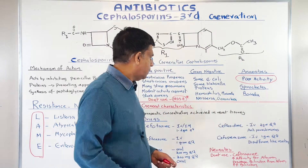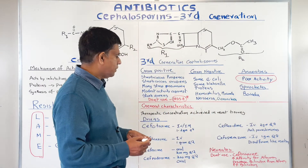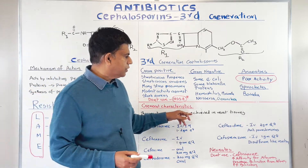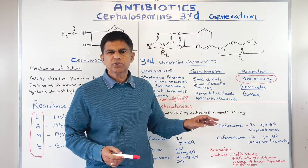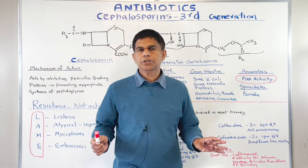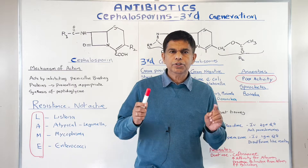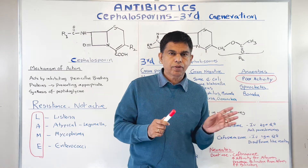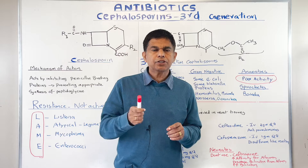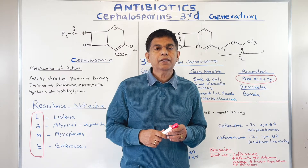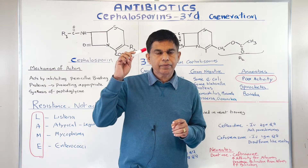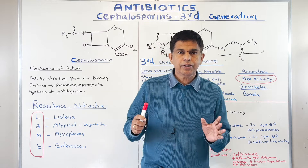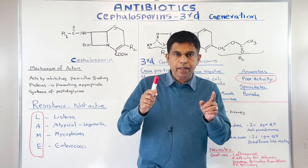For spirochetes, it's going to work against Borrelia. Now, the general characteristics: therapeutic concentration is achieved in most tissues — almost every tissue: bone, joint, bile. Bile is very important — we'll come back to that. It can also penetrate the CSF, and you can use it in meningitis.